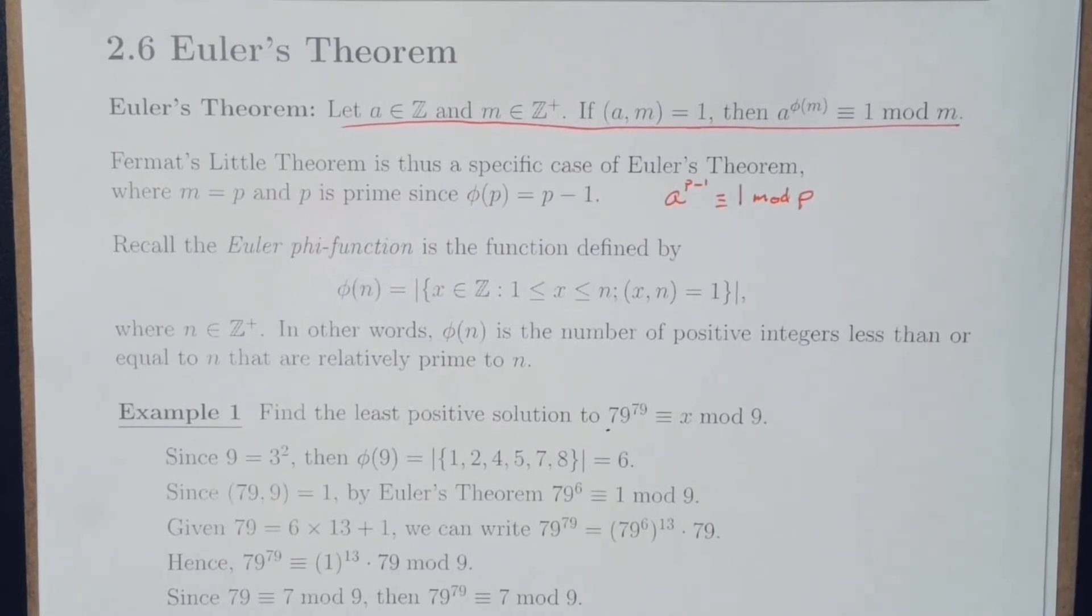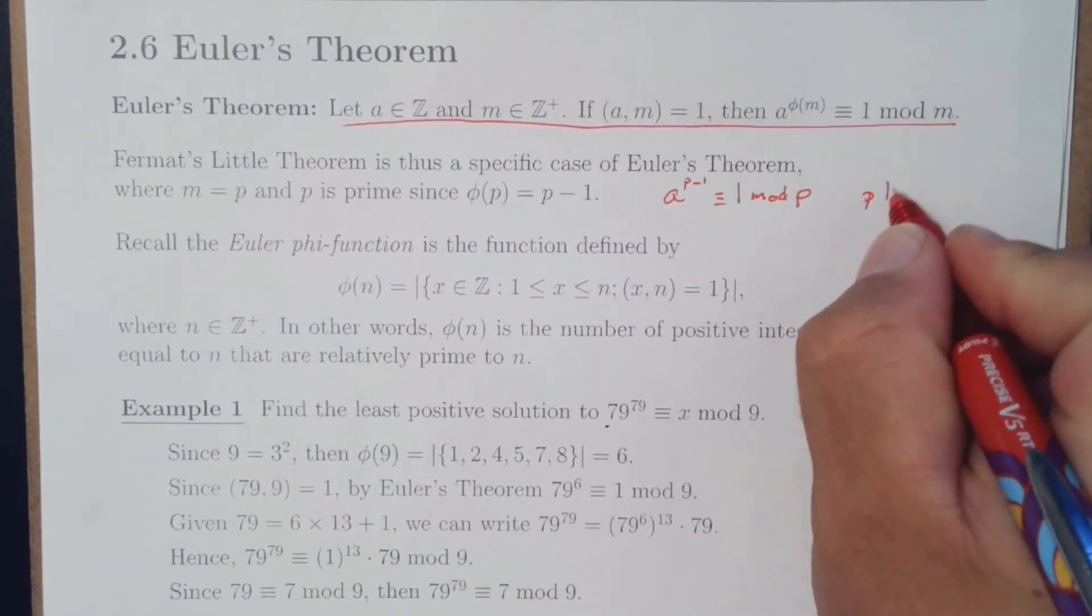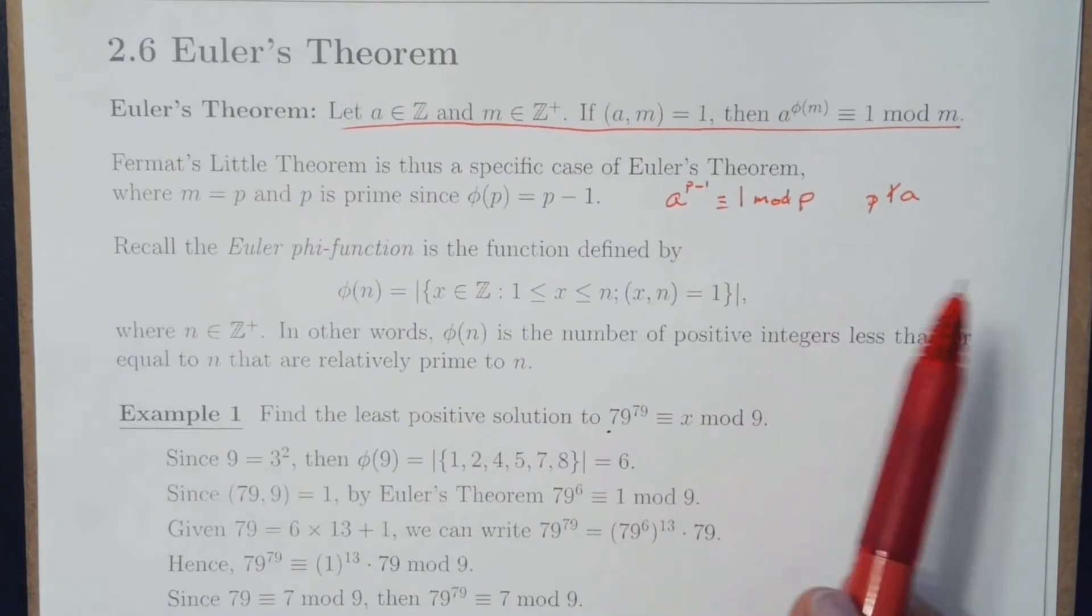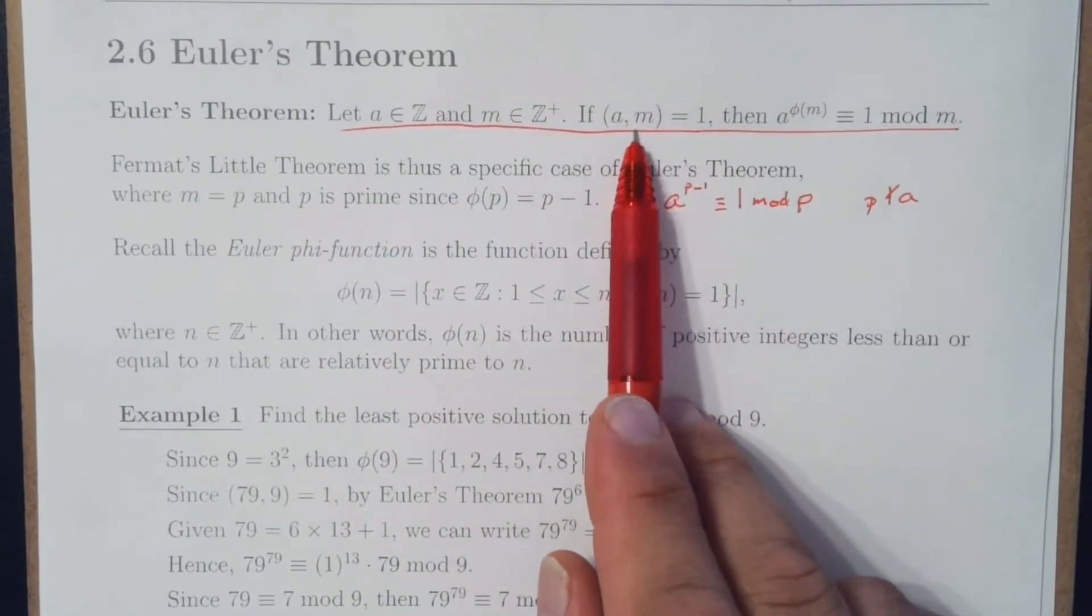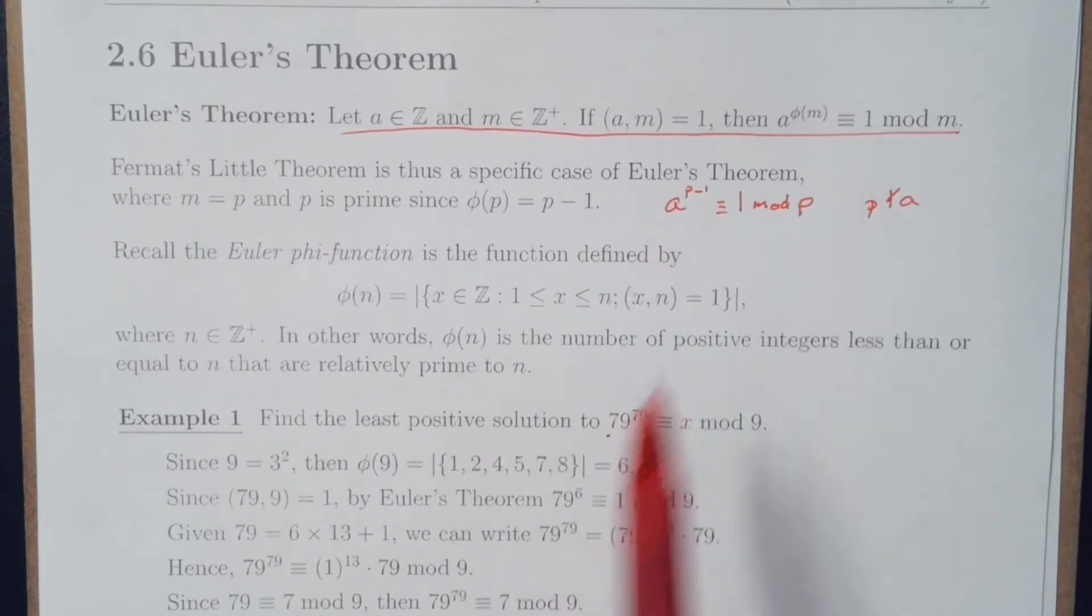That's as long as p is a prime number and a is an integer, where p does not divide a. And in essence, that's what a and m being relatively prime is indicating anyway.